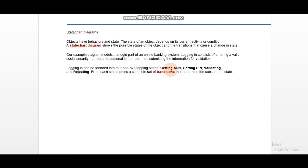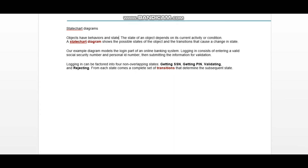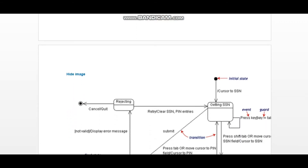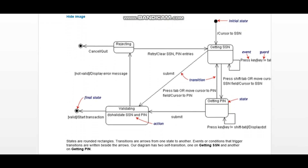From each state comes a complete set of transitions that determine the subsequent state. Transitions are represented by arrow lines showing the change in state.